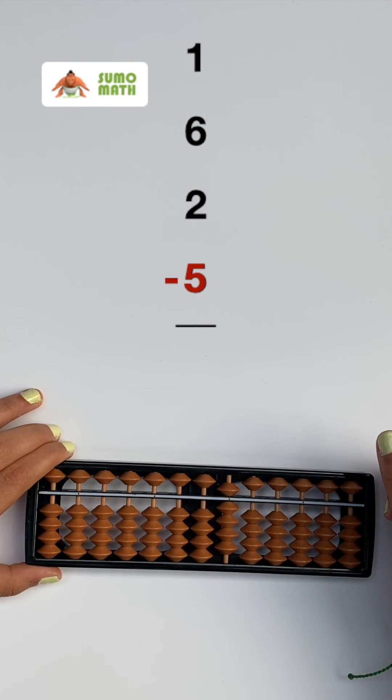Finally, subtract 5 moving the top 5 bead away from the bar with our index finger. Now, we know 1 plus 6 plus 2 minus 5 equals 4.